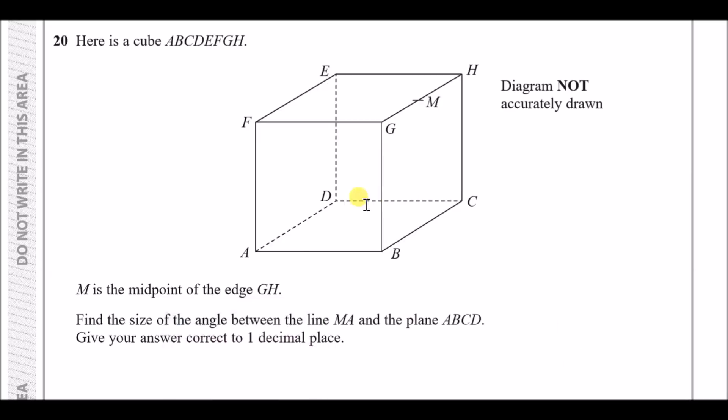The good thing about this problem is that we're dealing with a cube, so every length is the same. Because they don't give us a length, we can just make one up. I'm going to pick a length of two, so this is going to be a two-by-two cube — two all the way around.